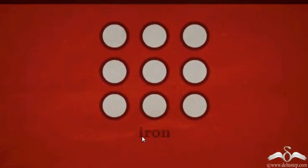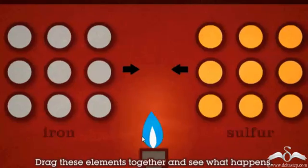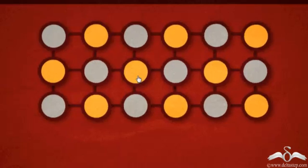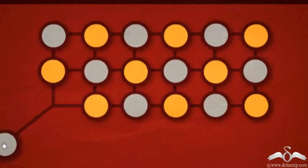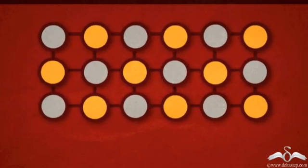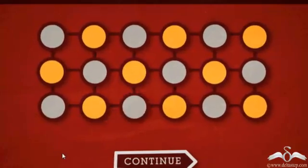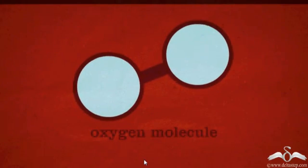Observe what is happening here. We have the iron element and the sulphur element. Iron atoms combine to give the iron element; similar sulphur atoms combine to give the sulphur element. Now let's heat the two. As we heat them, chemical bonds are formed between the iron and sulphur atoms. Since they are combined chemically, it is not possible to separate them by any physical method. The molecules of the same kind come together to form a compound.